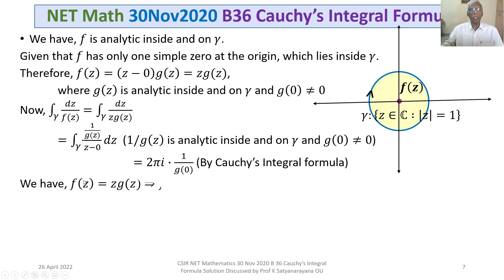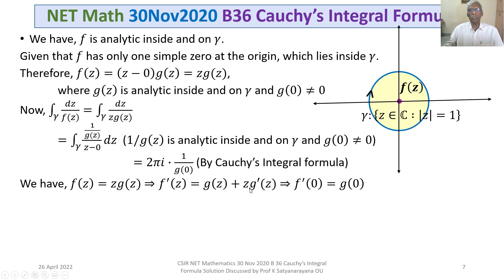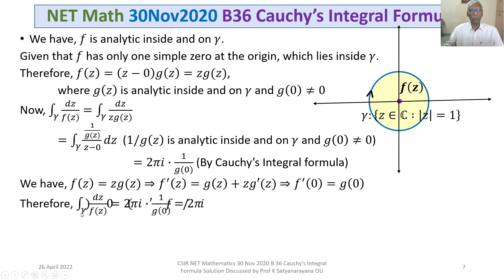Now, what is g(0)? We have f(Z) equals Z times g(Z). Differentiating both sides with respect to Z, we get f'(Z) equals g(Z) plus Z times g'(Z). Putting Z equals 0, we get f'(0) equals g(0), and g(0) is not equal to 0. Therefore the answer 2πi times 1/g(0) becomes 2πi times 1/f'(0). So the integral around gamma of dZ by F(Z) equals 2πi by f'(0).